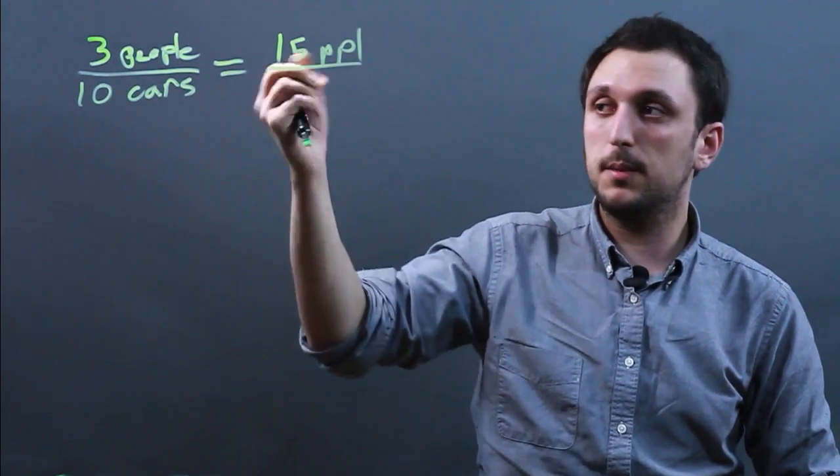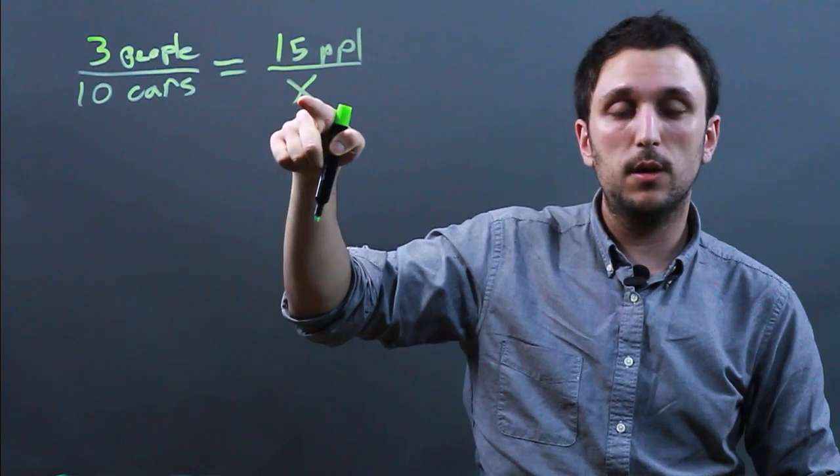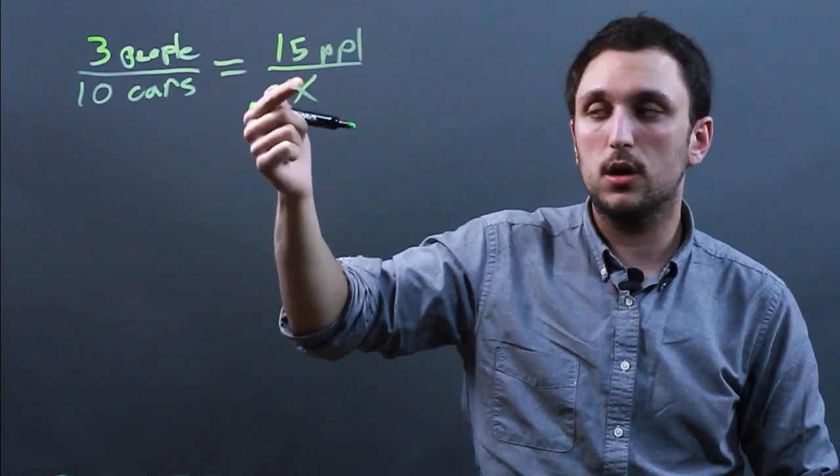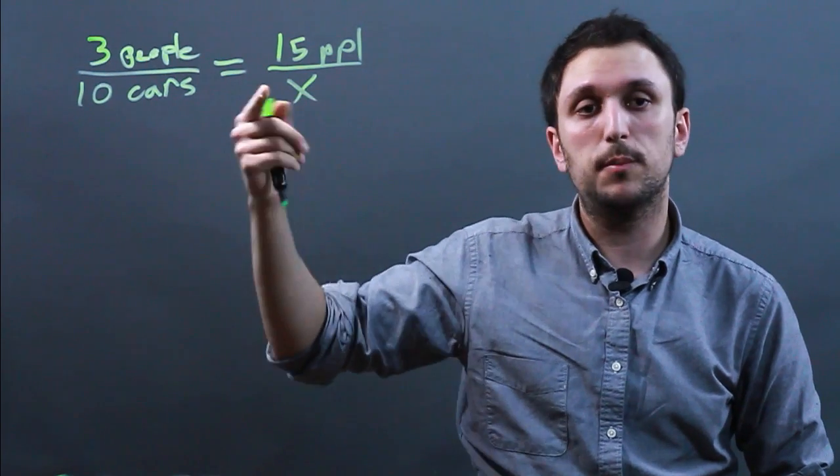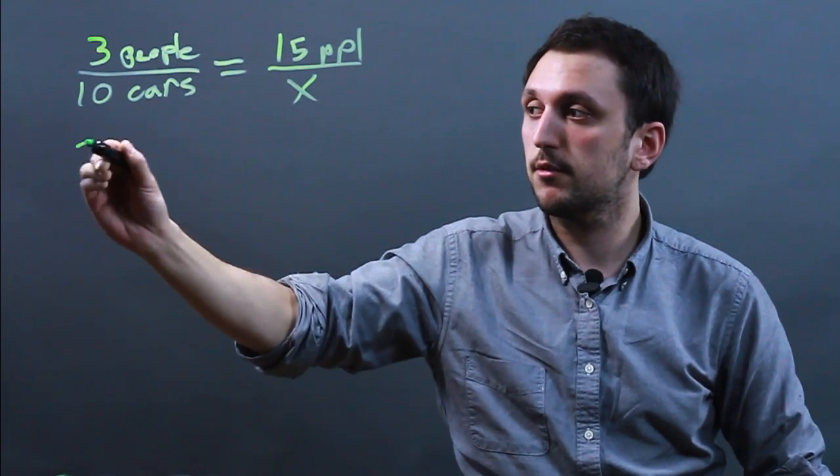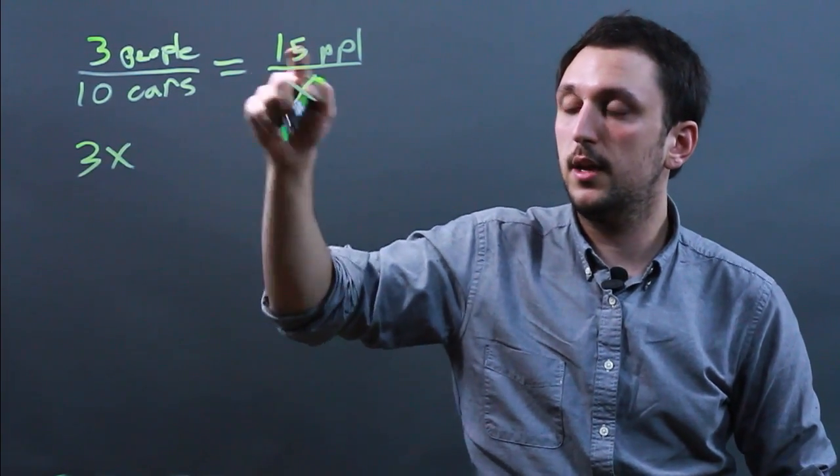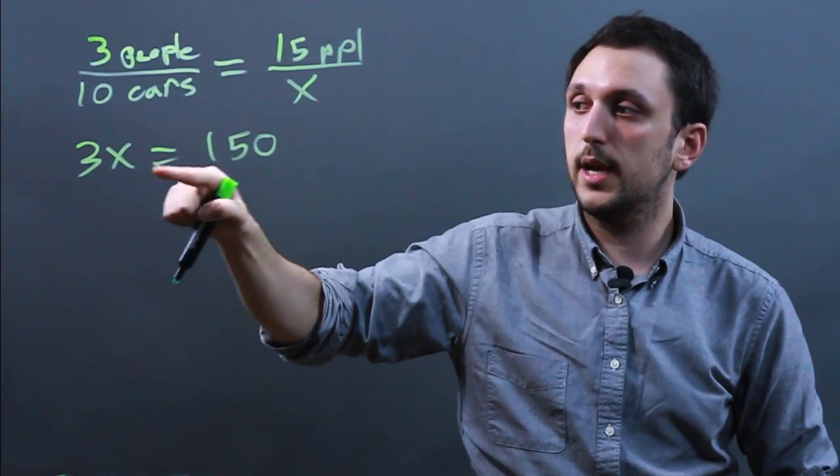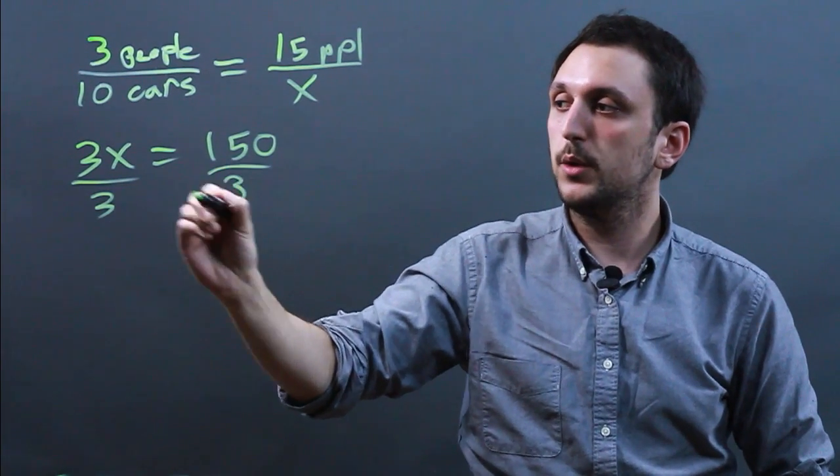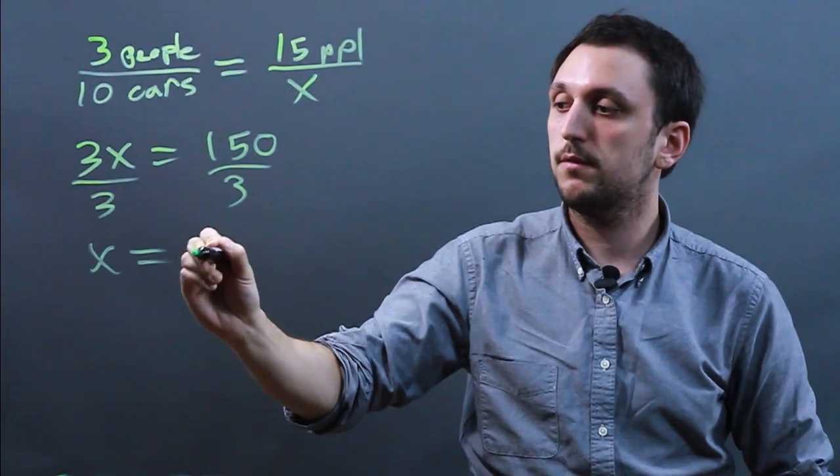So if we have 15 people, we want to know the number of cars. We can call this x, we can call it question mark. No matter what, with the direct proportion, you're going to cross multiply. So 3 times x is 3x equals 10 times 15, which is 150. So 3x equals 150. We divide each side by 3, and we get x equals 50.